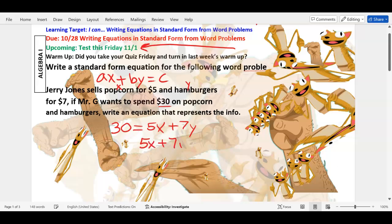Now if it's multiple choice, you'll probably see it flipped around like this: 5X plus 7Y equals 30. This isn't really solvable without additional information, and we'll do that when we talk about systems of equations. But for now, that's all I'm asking you to do.